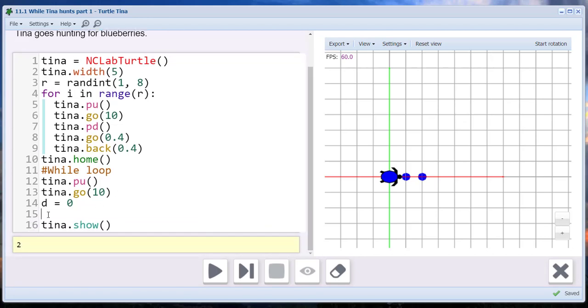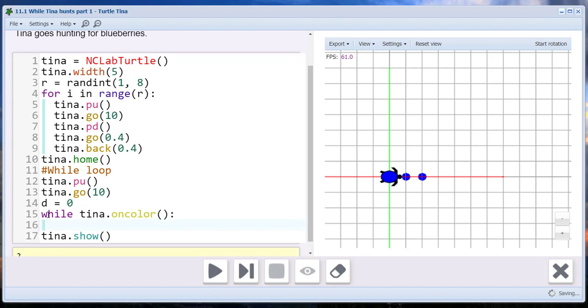And initiate our counting variable. Now we're ready to start the loop. While Tina on color, start it just like a for loop, D. And that's what we're going to do. If it's testing true, we're going to increase our counter by one and then move to the next dot. That's it for the loop, very simple.